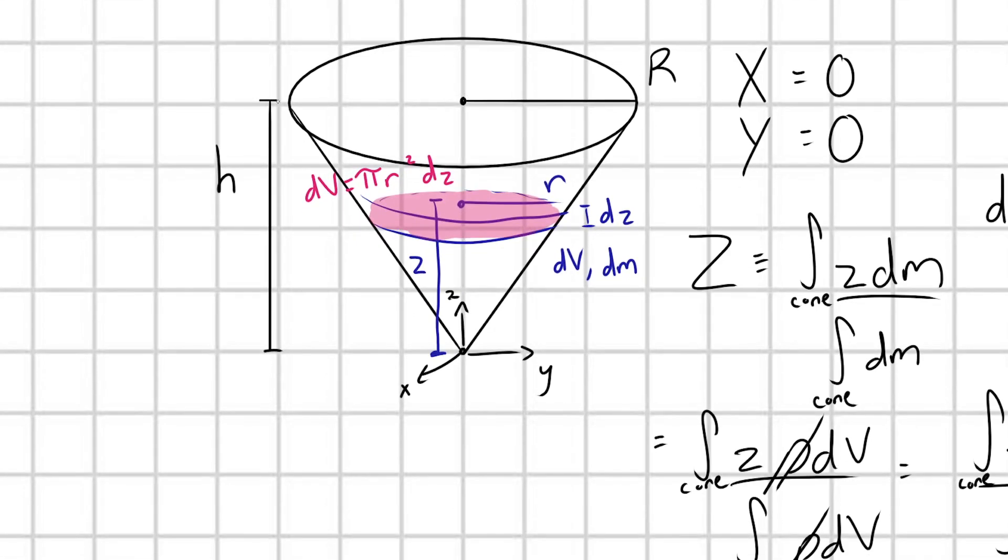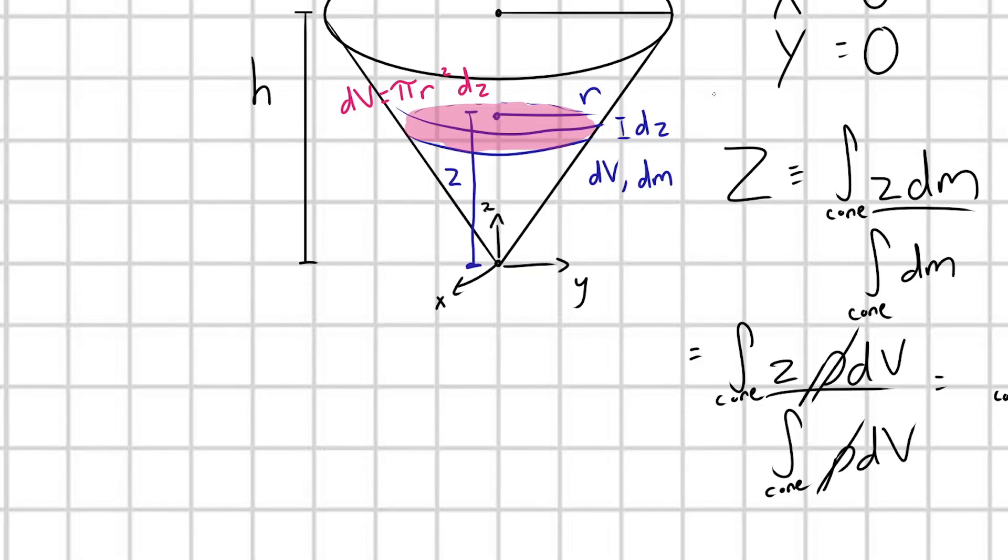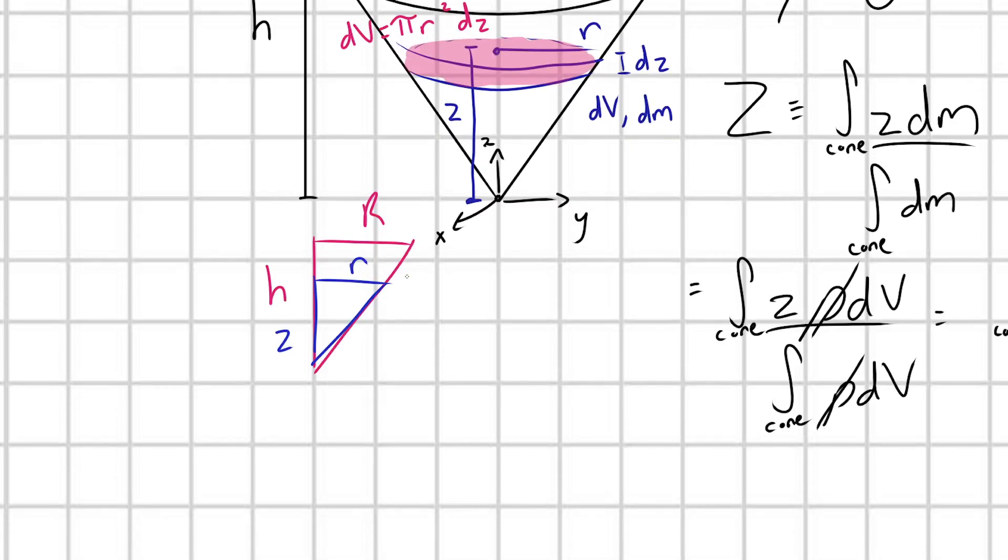But let's go ahead and formalize this, and we can do it by using similar triangles. Do you see how I kind of have two triangles here? I have this h and this capital R, and I have this z and this little r. So let me go ahead and point out that those are going to be similar triangles. So I'm going to have a big triangle with legs h and capital R, and then I'm going to have a little triangle inside of it with legs z and little r. And so when you have similar triangles,